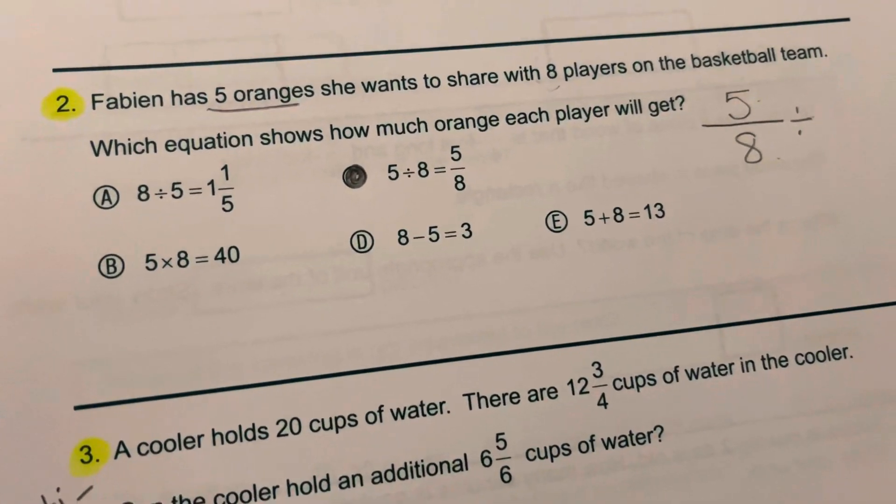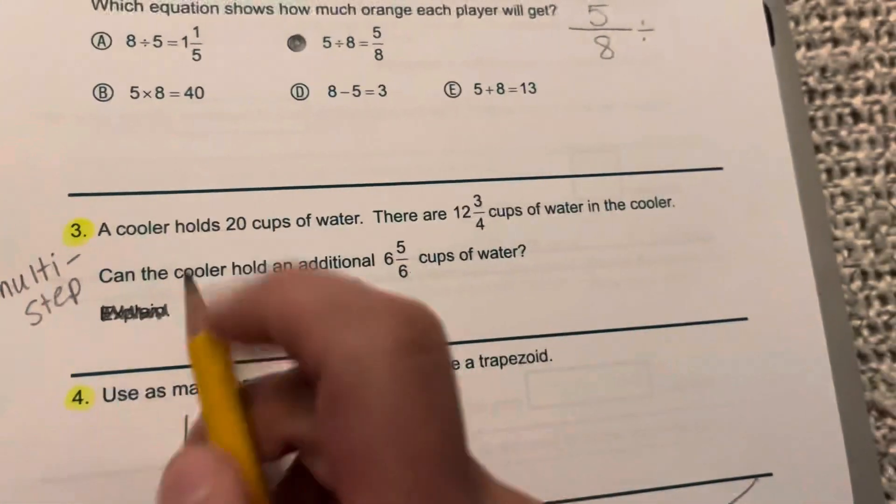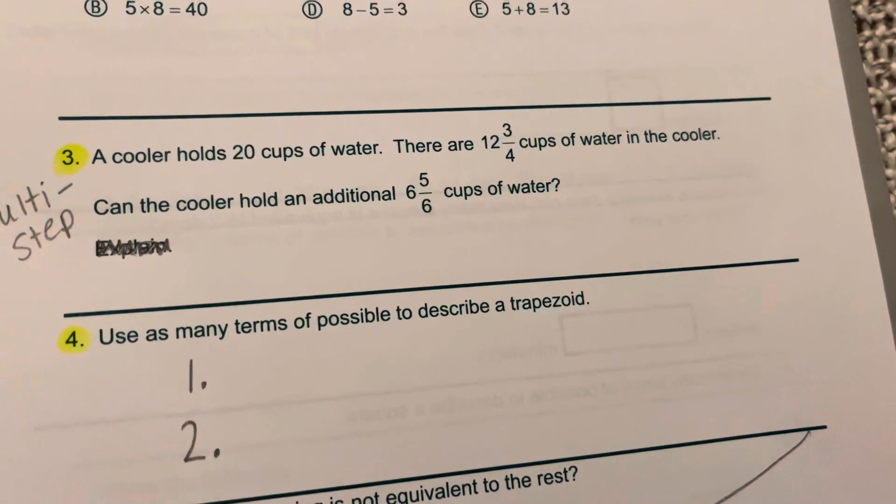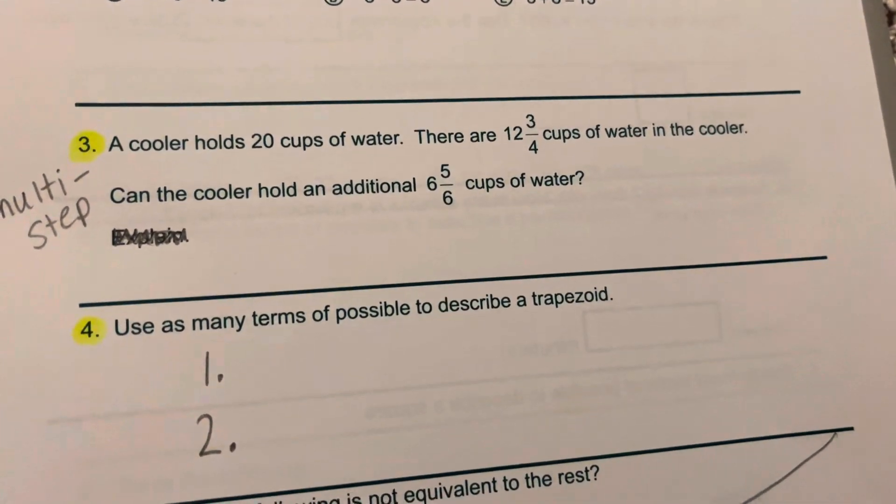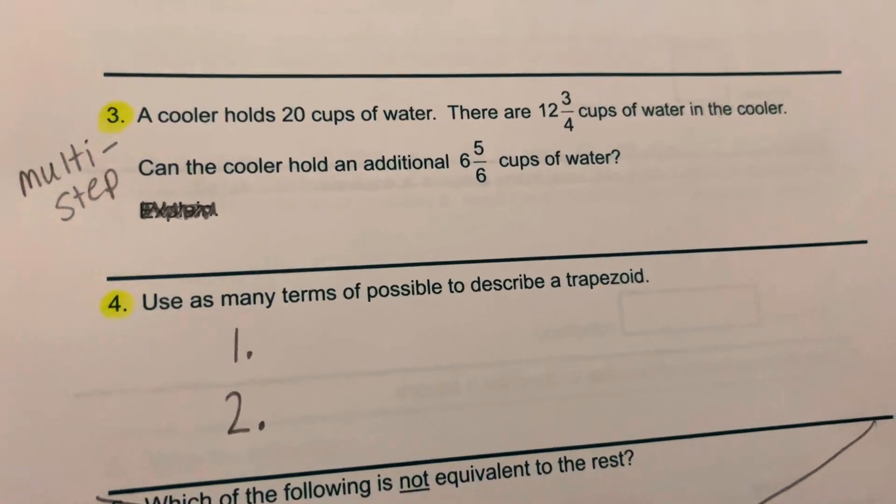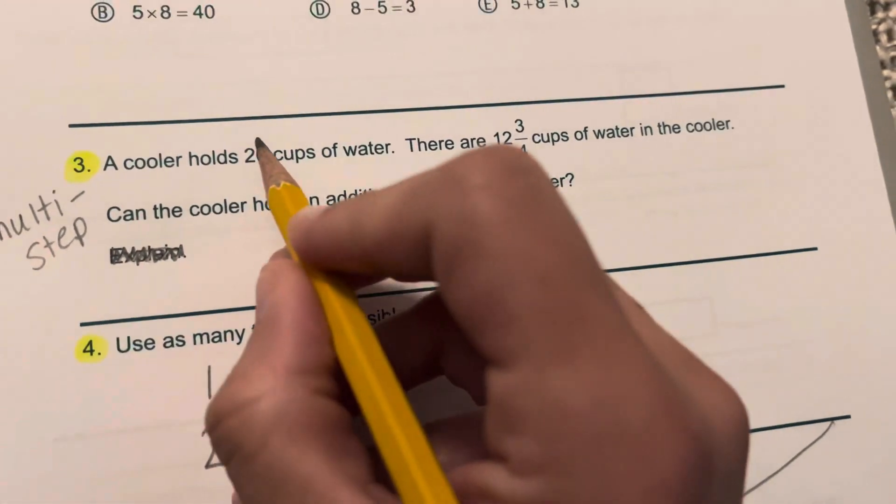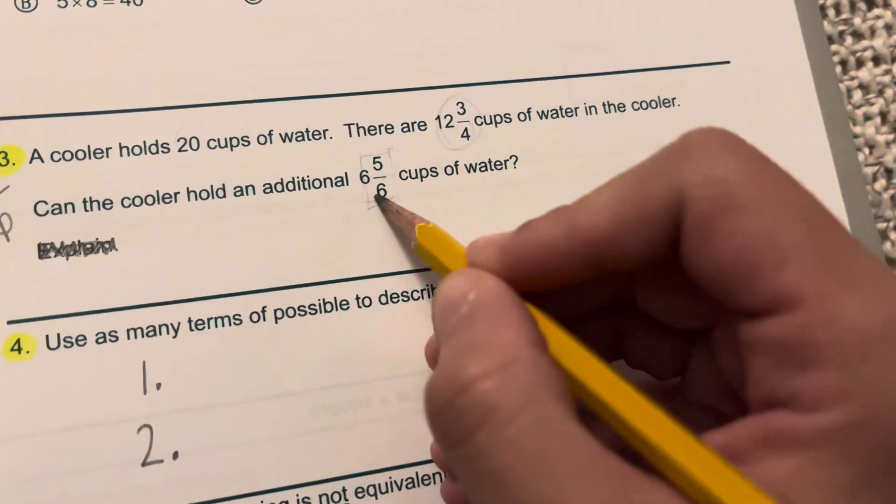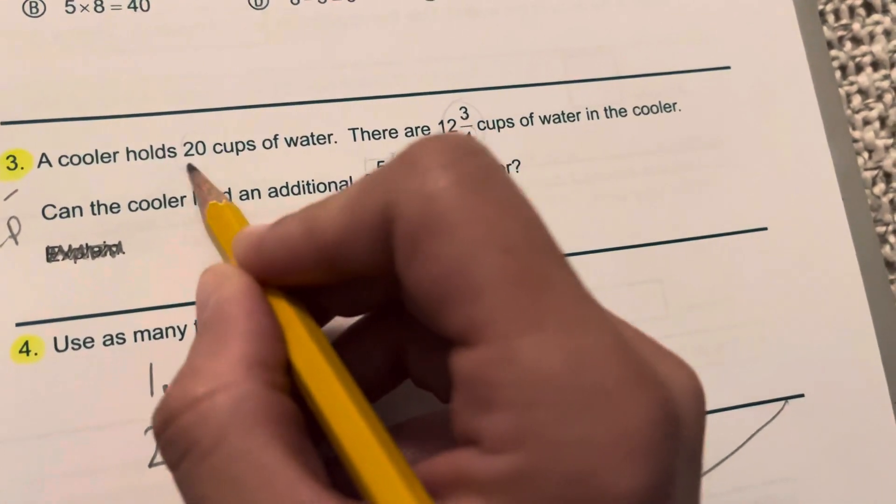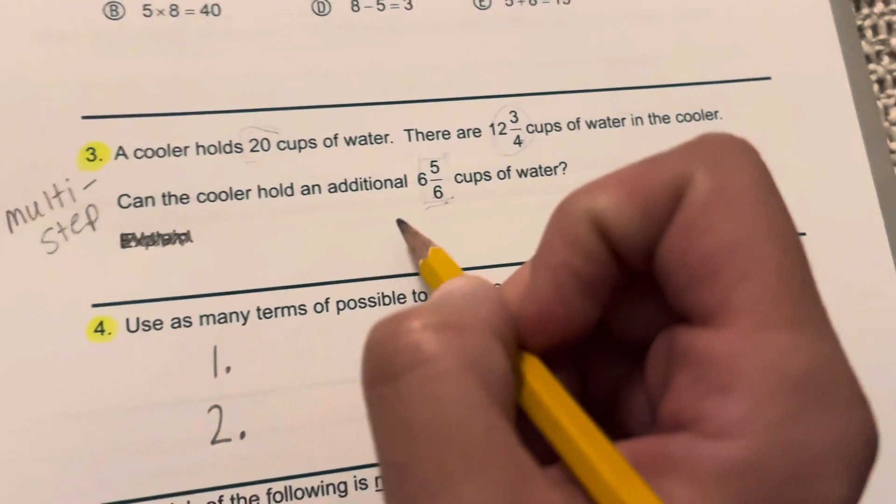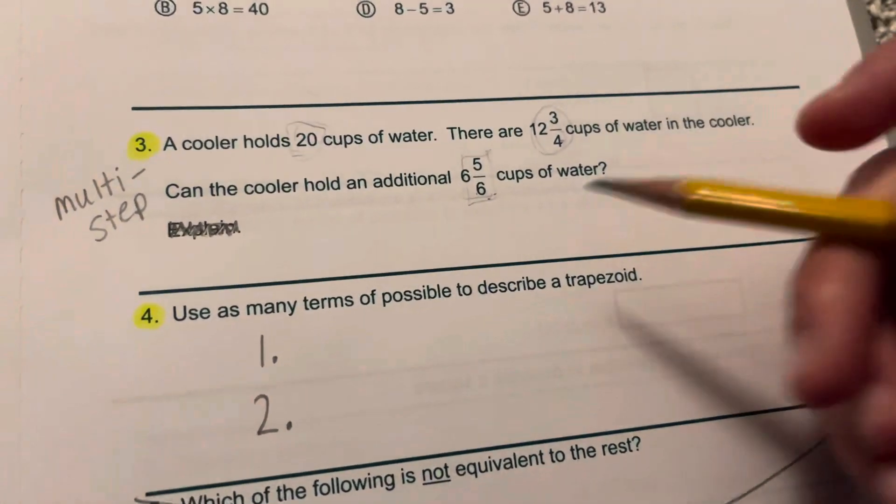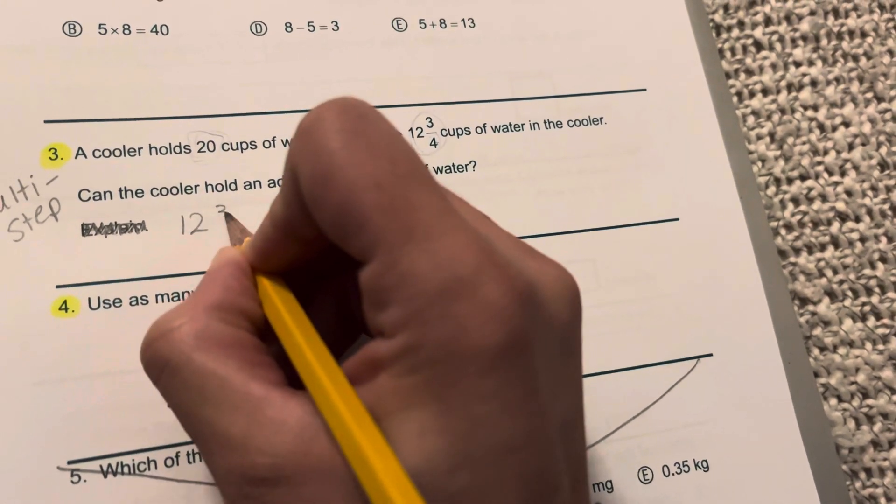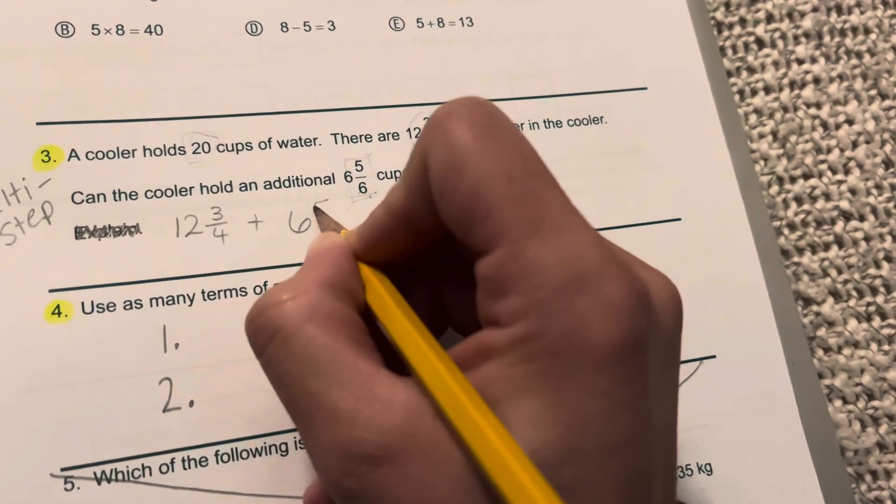Number 3, we got rid of explain. It just says a cooler holds 20 cups of water. There are 12 and 3 fourths cups of water in the cooler. Can the cooler hold an additional 6 and 5 sixths cups of water? There are a few ways you can do this. You could take the 20 cups of water and subtract what's already there and see if you have this much or more left over. Or you can put those two numbers together and then figure out are you already over 20 or not. A lot of you, especially in my homeroom, you tried to add these numbers together first. So I'm going to do that. I'm going to take 12 and 3 fourths and I'm going to add 6 and 5 sixths to that.